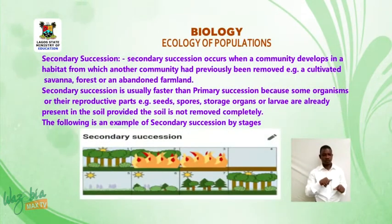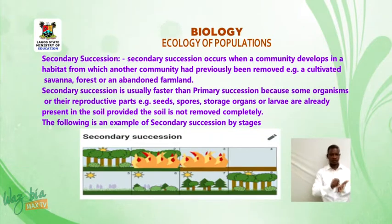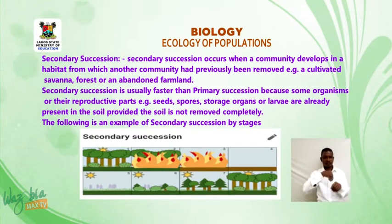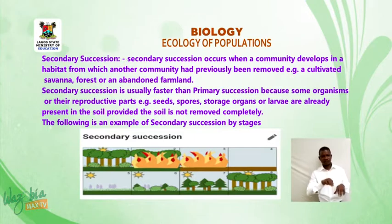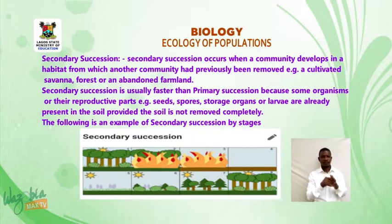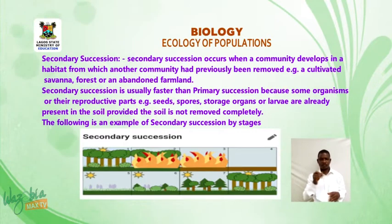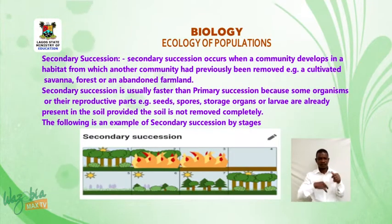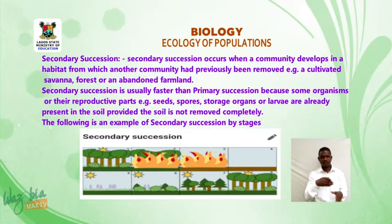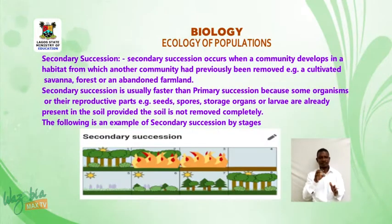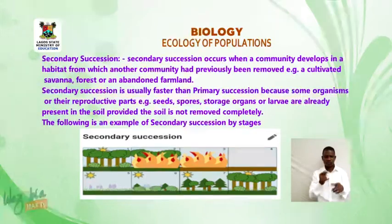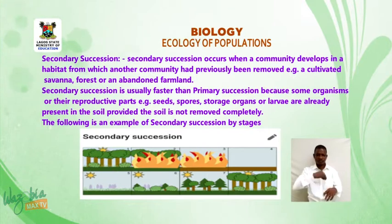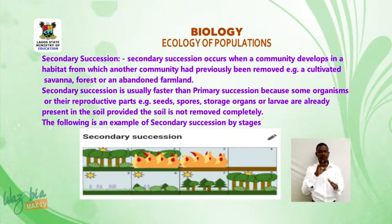Secondary succession occurs when a community develops in a habitat from which another community had previously been removed — for example, a cultivated savannah, forest, or abandoned farmland. Secondary succession is usually faster than primary succession because some organisms or their reproductive parts, such as seeds, spores, storage organs, or larvae, are already present in the soil, provided the soil is not removed completely.